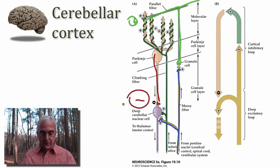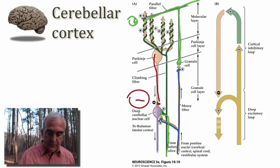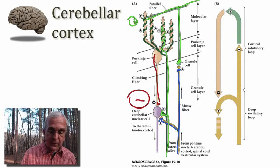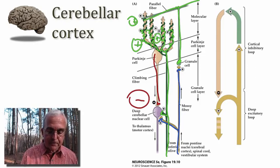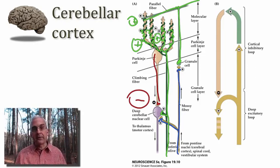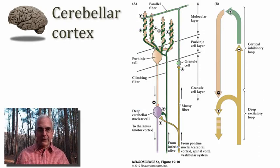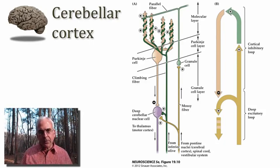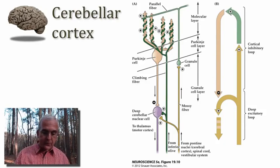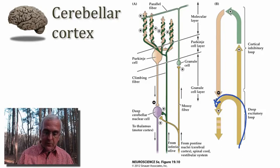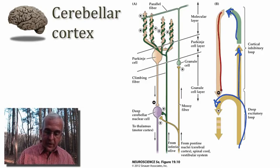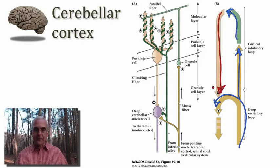Meanwhile, there is a climbing fiber giving rise to inputs at both the level of the deep nuclei and also this very special intimate relationship with the proximal dendrite of the Purkinje cell, where there is a massively strong excitatory connection. We can conceptualize these connections as consisting of a main excitatory loop and a cortical inhibitory loop that runs through the Purkinje neuron back down to the deep cerebellar nucleus. Excitatory input comes into the deep cerebellar nucleus and meanwhile there is a transformation of that excitatory input into an inhibitory signal that can modulate the output of that excitatory neuron from the deep cerebellar nucleus.